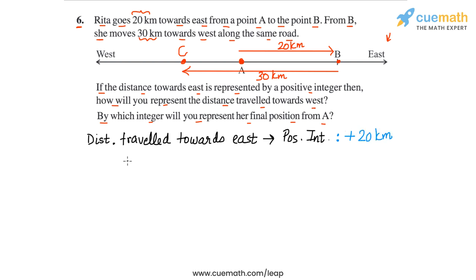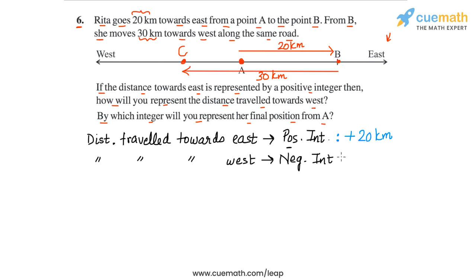This means that any distance traveled towards the west has to be represented using a negative integer, since the west direction is opposite to the east direction, and we are taking distances in the east direction as positive. In this case, because Rita traveled from B to C — a distance of 30 km towards the west — we represent this distance covered as minus 30 km. So the first part of our answer is that any distance traveled towards the west can be represented using a negative integer.